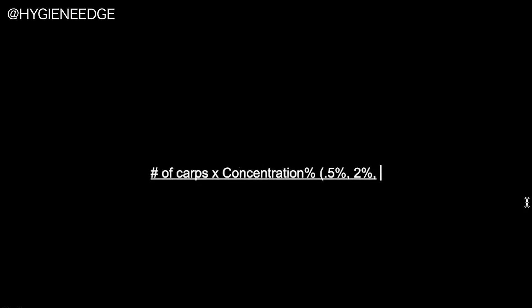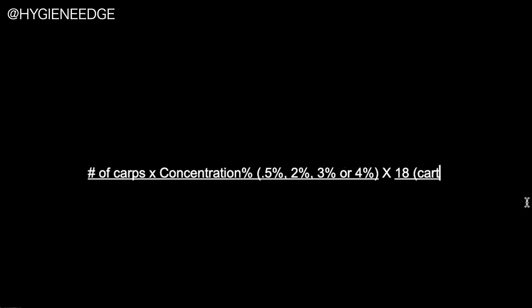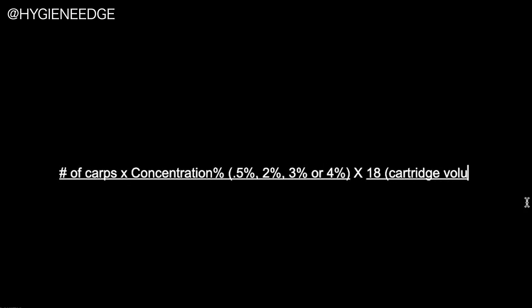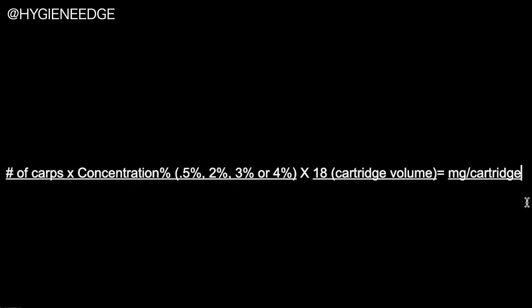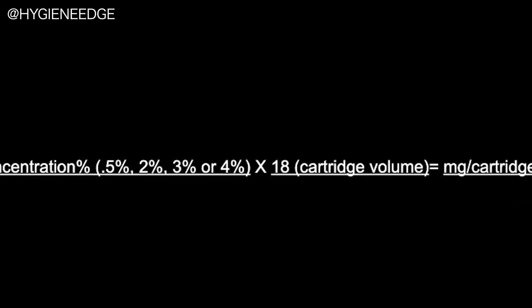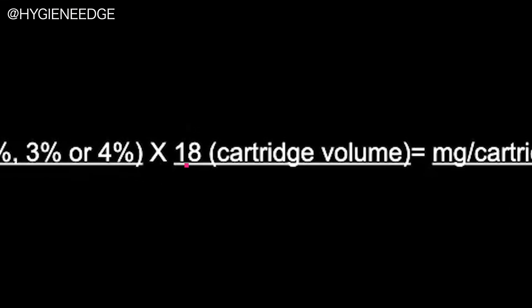You're going to take the number of carps times the concentration, and times that by 18, which is the amount of solution in the cartridge. That will give you your milligrams per cartridge. I got this 18 by moving the decimal one spot over from 1.8.